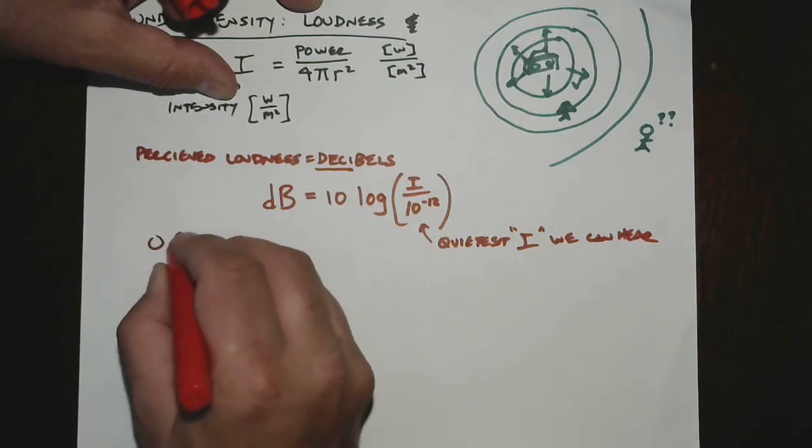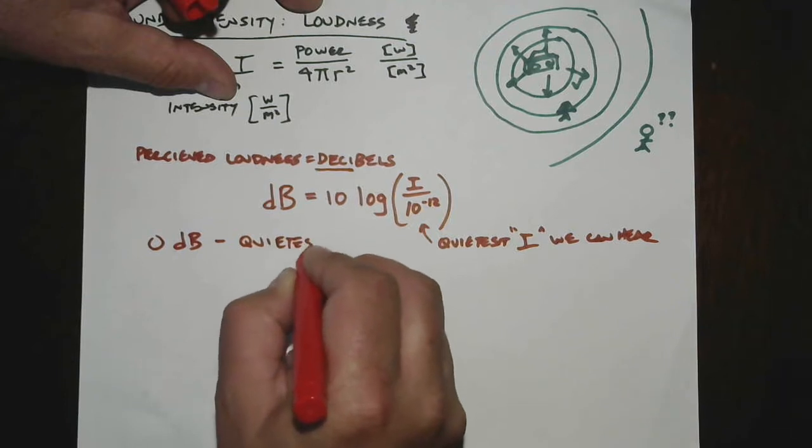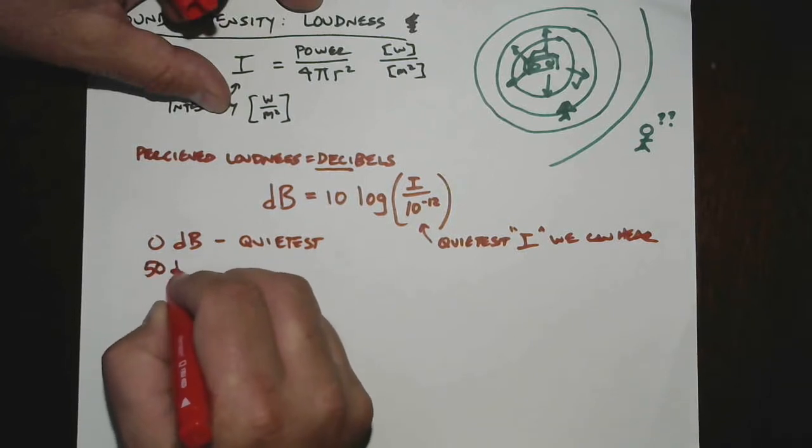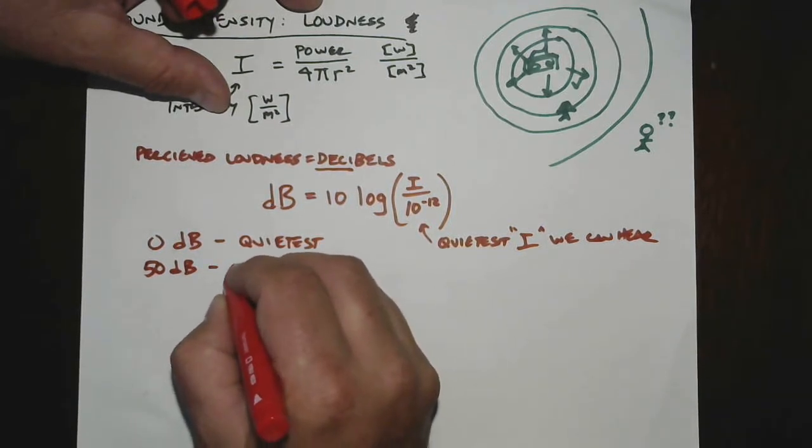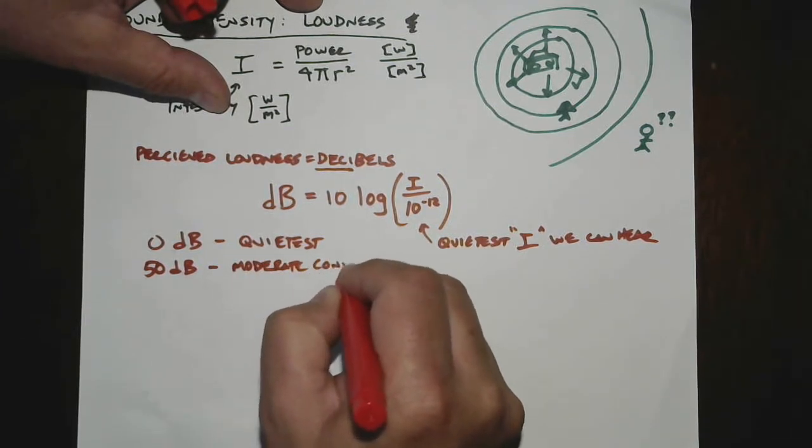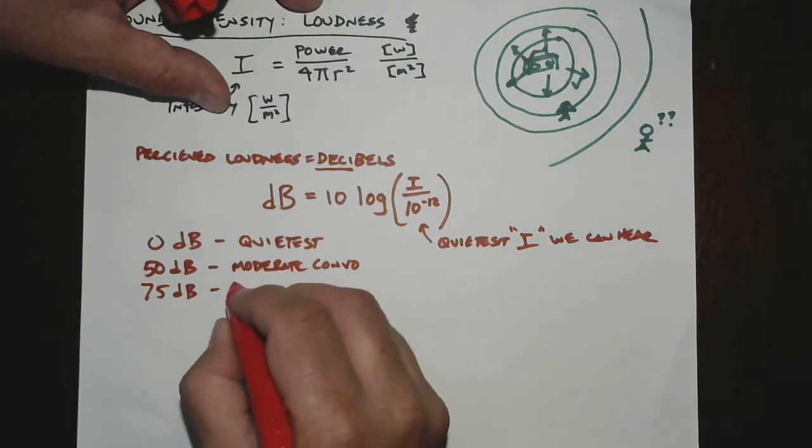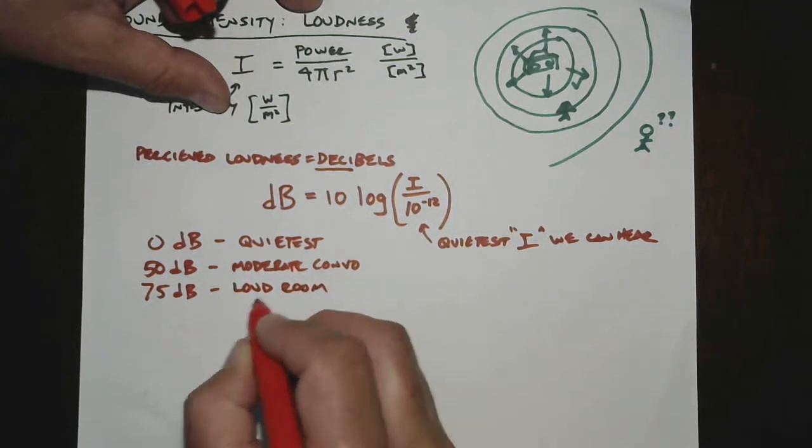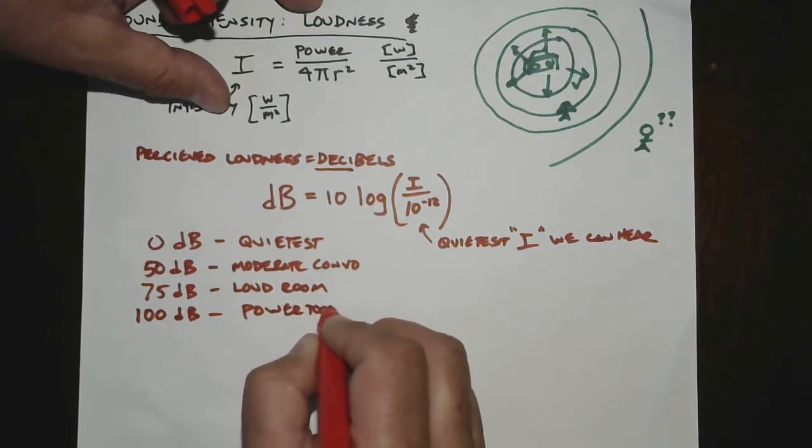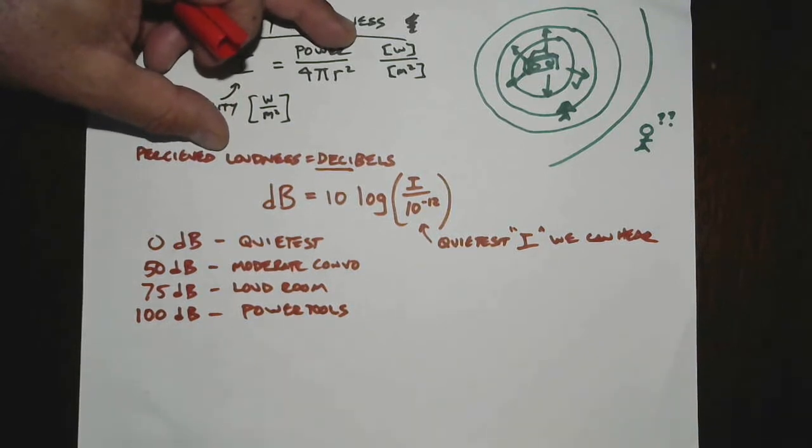And so 0 dB would correspond to the quietest sound that we could hear. There's some other things like 50 dB is kind of a moderate conversation, like if you were just talking quietly to the person next to you. 75 dB is kind of like a loud room. When you get up to 100 dB, we're talking power tools here, not a jackhammer, but something close, like a circular saw or something that makes a lot of noise where you'd want to wear hearing protection.